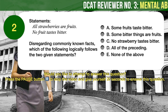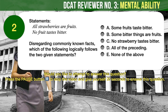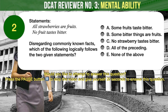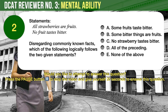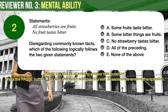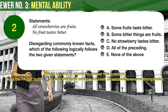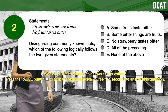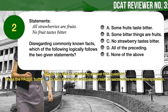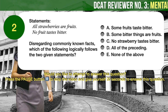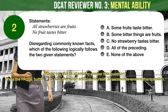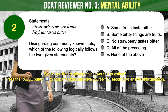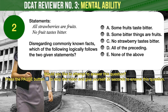Question number 2. Given two statements: Statement 1 — All strawberries are fruits. Statement 2 — No fruit tastes bitter. Disregarding commonly known facts, which of the following logically follows the two given statements? A: Some fruits taste bitter. B: Some bitter things are fruits. C: No strawberry tastes bitter. D: All of the preceding. E: None of the above.